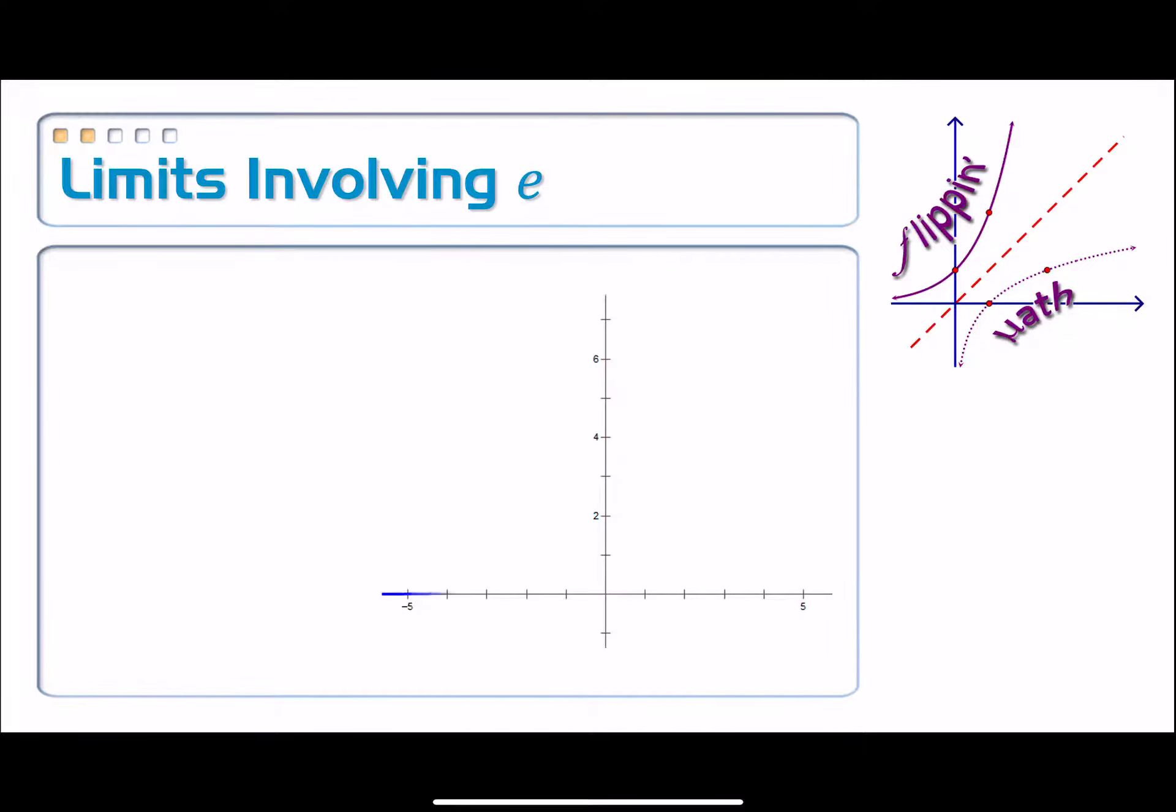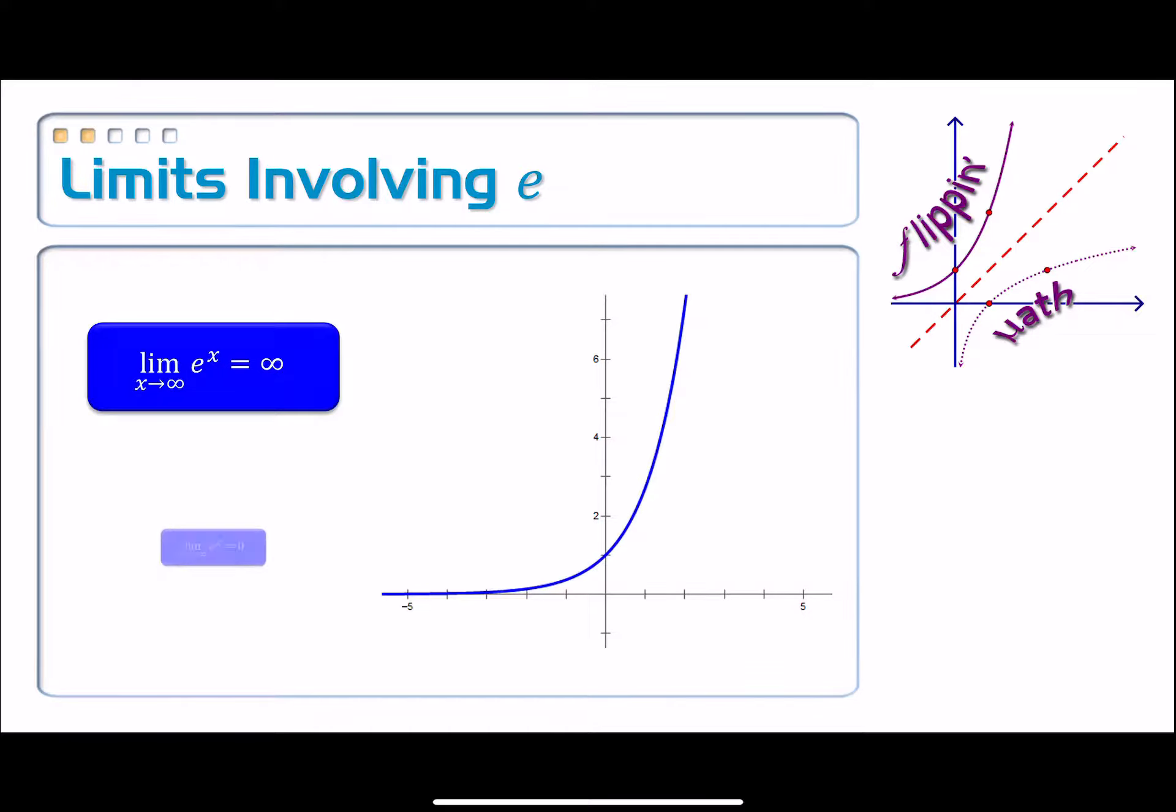So write something down for each one of these. Here's the graph of f of x equals e to the x. And if I have the limit as x approaches infinity of e to the x, that should be infinity. Just think of the graph. Nothing really to memorize. Just think of what that graph looks like. And then the limit as x approaches negative infinity, e to the x is equal to zero.